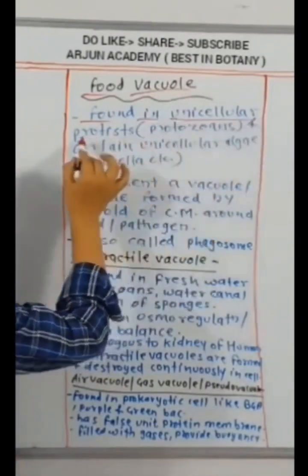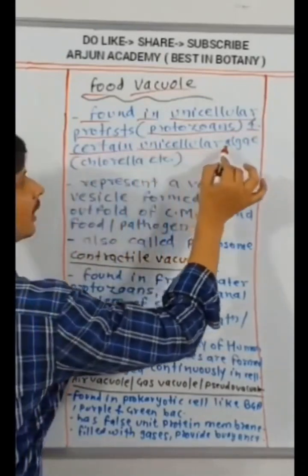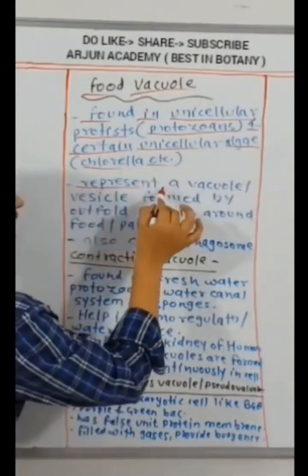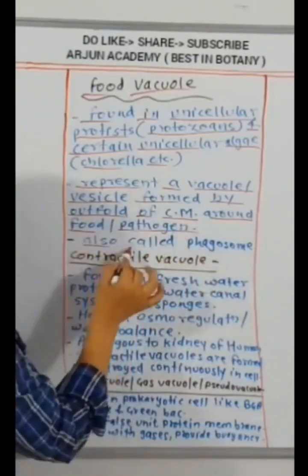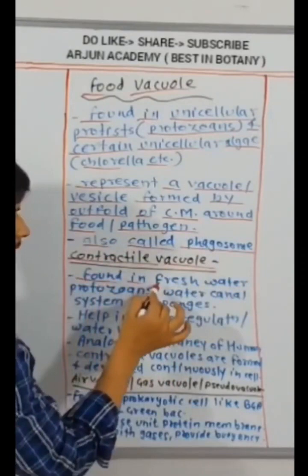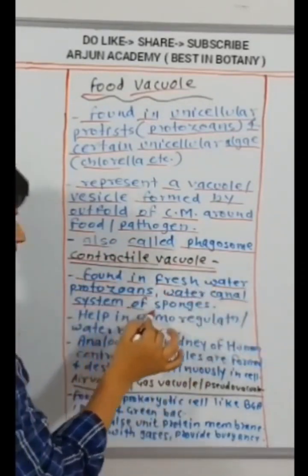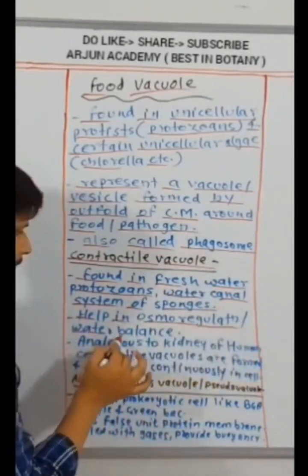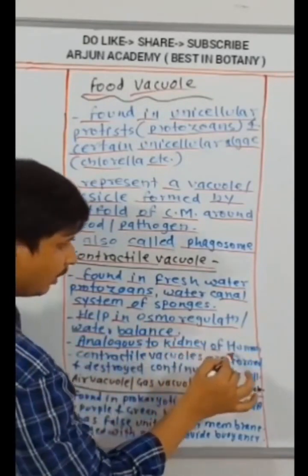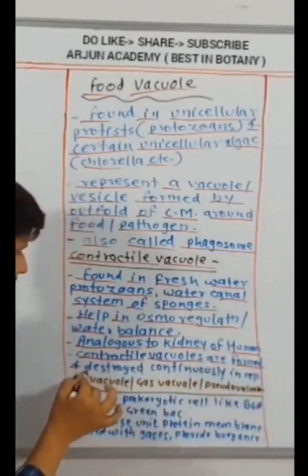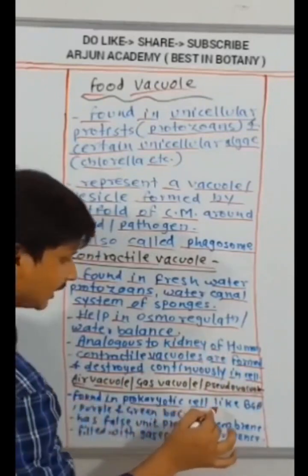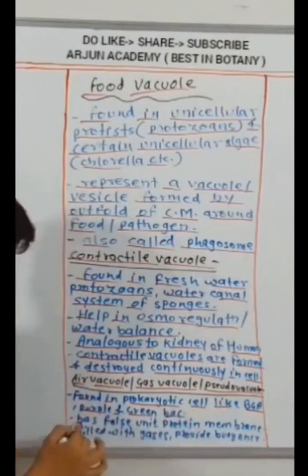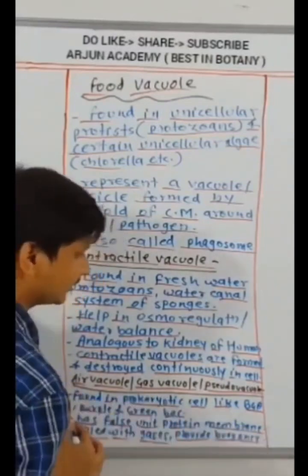Food vacuole found in unicellular protists, protozoans, and certain unicellular algae like Chlorella, etc. Represent a vacuole or vesicle formed by outfold of cell membrane around food or pathogen. Also called phagosome. Contractile vacuole found in freshwater protozoans. Water canal system of sponges. Help in osmoregulation or water balance. Analogous to kidney of human. Contractile vacuoles are formed and destroyed continuously in cell. Air vacuole, gas vacuole, pseudovacuole. Found in prokaryotic cell like blue-green algae, purple and green bacteria. False unit protein membrane. Filled with gases provide buoyancy.